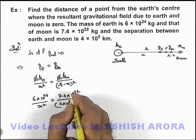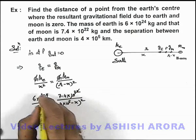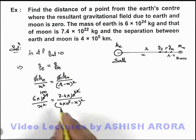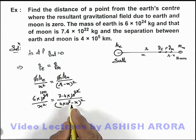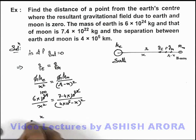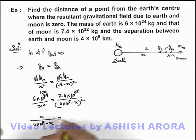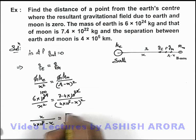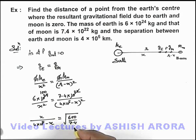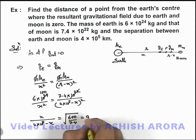Now in this situation, this 22 and this 24 gets cancelled out. Hundred will be left over here, and if we take the square root of this expression, this will give us x by 4 × 10^5 minus x is equal to root of 600 by 7.4, and if we simplify, this will be equal to 9.